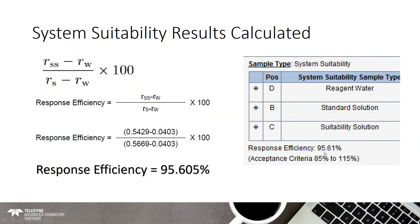Just to verify the system calculated it correctly, I also hand-calculated the response efficiency using the formula given in the method, substituting the values we received. The hand calculation gives 95.605%, which matches the software's 95.61% — it just rounded to the second decimal point. You do not have to do this by hand if you have a Fusion.